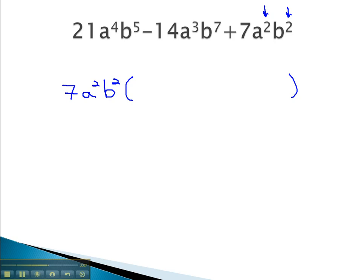This is what goes in front of the parentheses, and then we can divide each of these terms by that common factor, 7a squared b squared, all the way across.